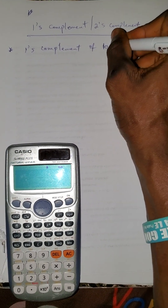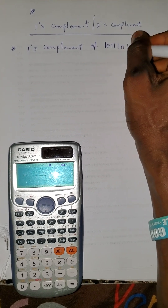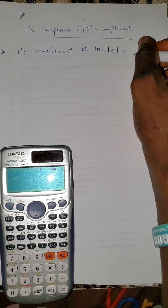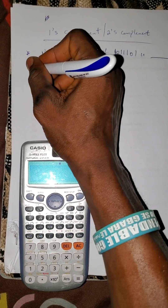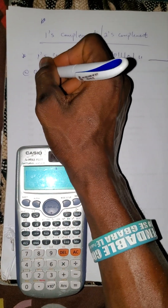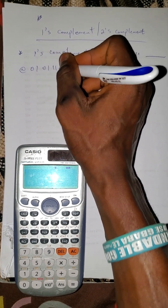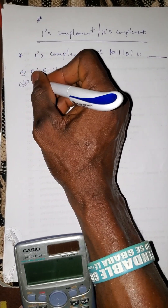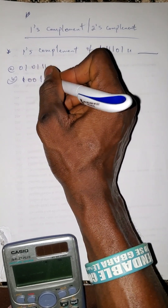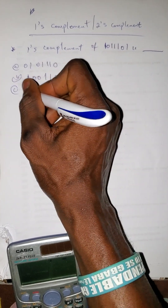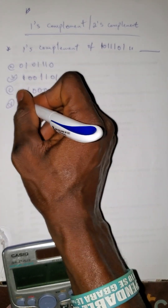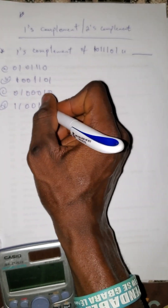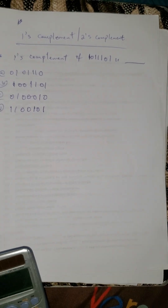Find the one's complement of 1011101. The options are: option A: 0100010, option B: 1001101, option C: 0100010, option D: 1100101.